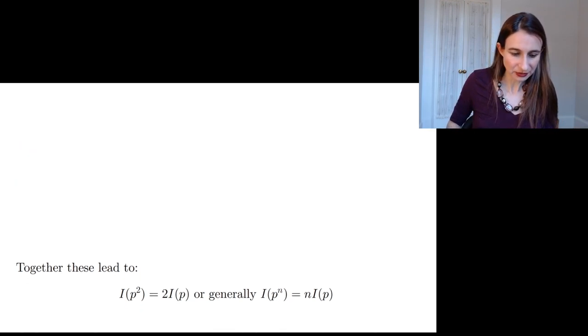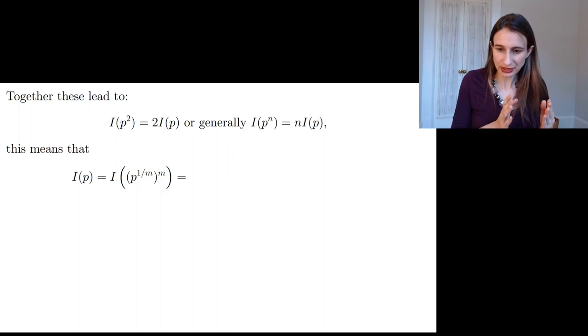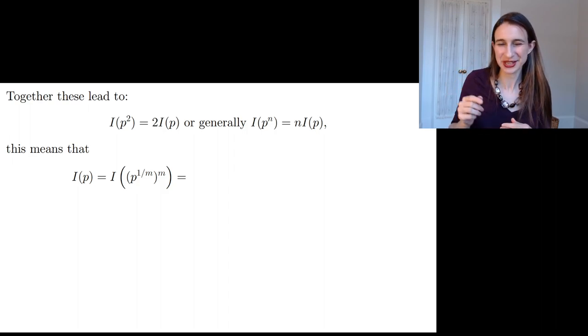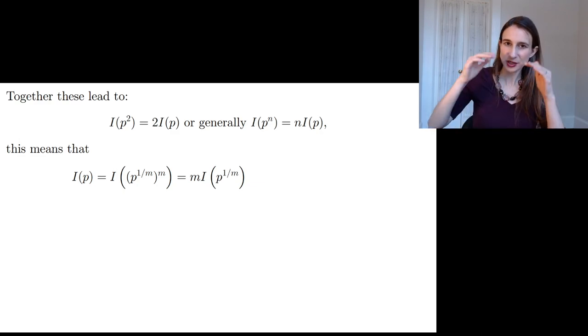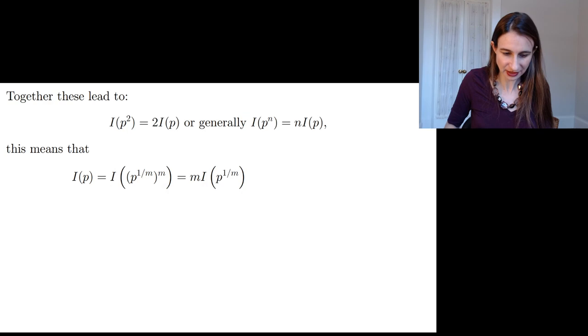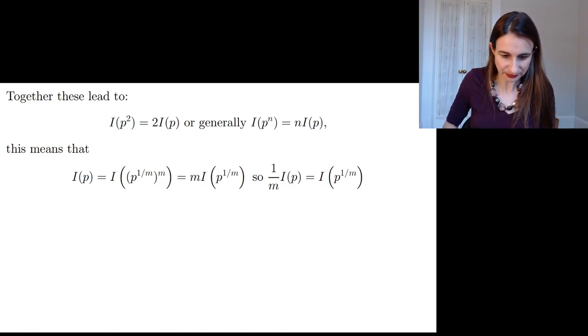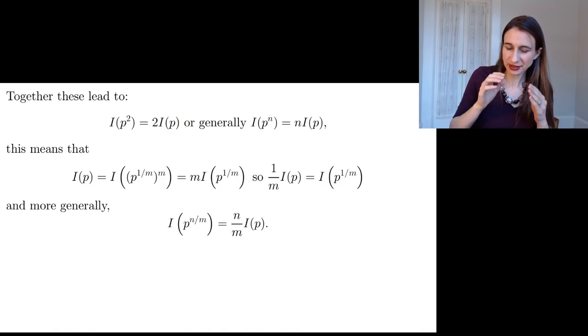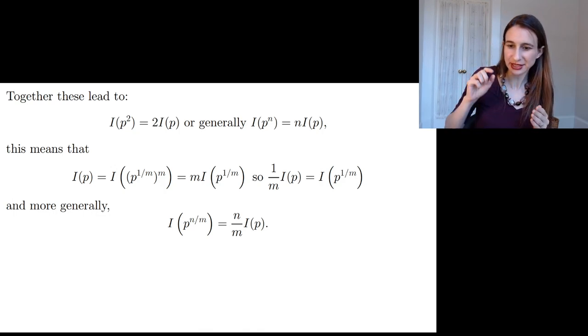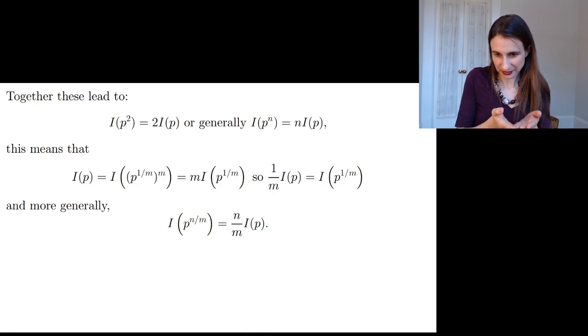So those are the principles, and together they lead to the information of p². So this is the same thing as two independent events. That has to equal two times the information of one of the two events. They're equal events. This just comes from the second principle. And then you can generalize this argument to say, if you had n independent events, you have p to the n, and then you can view that as being n times the information of one event because these events are independent.